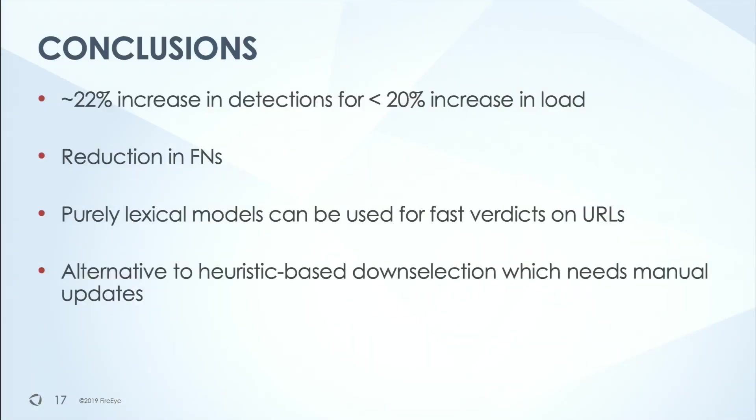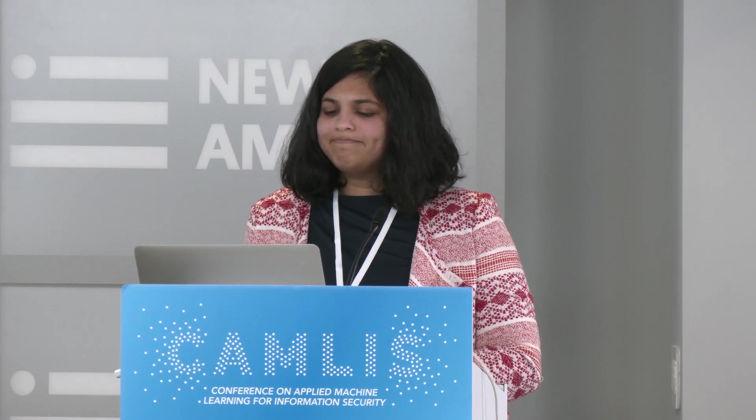After the model went into production, we observed a 22% increase in detections coming from URLs from the engine. All these are URLs that were selected by the NLP-based model for slow analysis, and we did see a reduction in false negatives after we put the model into the workflow. What I concluded was that purely lexical models do have some contribution and are a good alternative to regex or rule-based down selection methods that require constant updates. Something like this generalizes better to a variety of URL patterns.